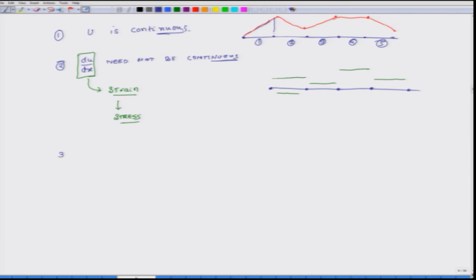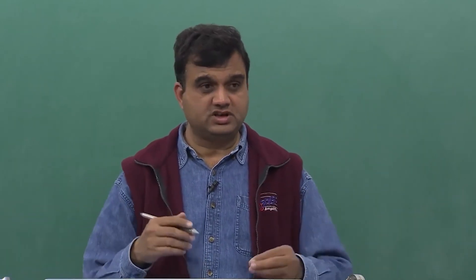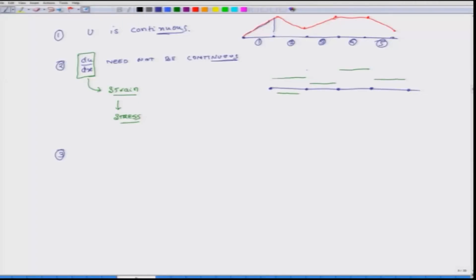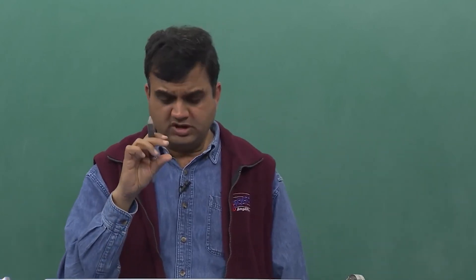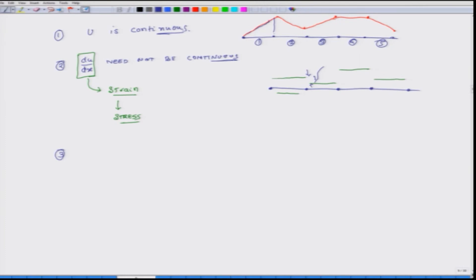However, if we keep increasing the number of elements, these jumps in strains will reduce — they will never become zero mathematically, but they will keep on reducing. So if you are looking for convergence of displacement, because displacements are continuous they converge faster. If you are looking for convergence of stress, you need even more elements. Suppose you have convergence of U for 20,000 elements; that does not guarantee your stresses will also be converged — for that you may have to go to 40,000 elements.